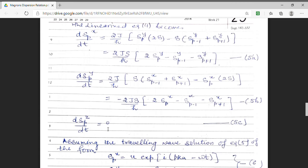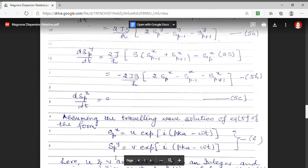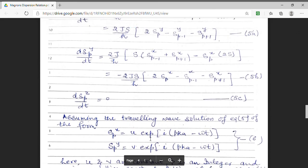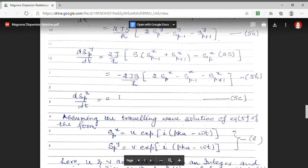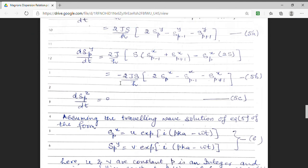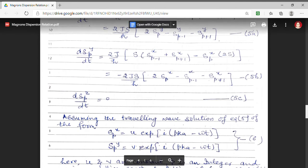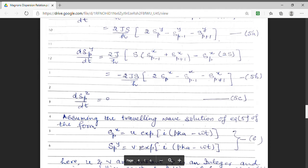Now, these are linear expressions. And, the linear expressions have a traveling wave solution. I am assuming the traveling wave solution of these expressions to be, let the solution of this expression is spx and let it be equal to u exponential iota pka minus omega t. And, the solution of other expression, spy to be equal to v exponential iota pka minus omega t.